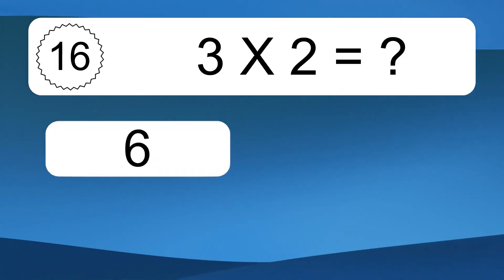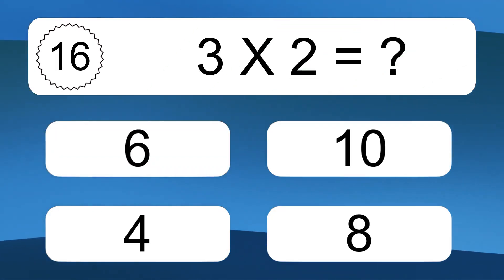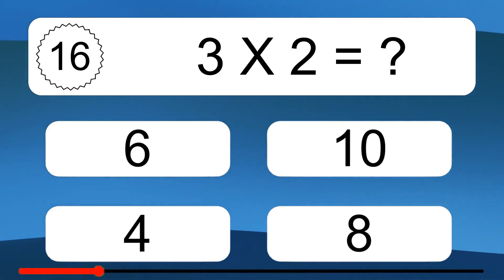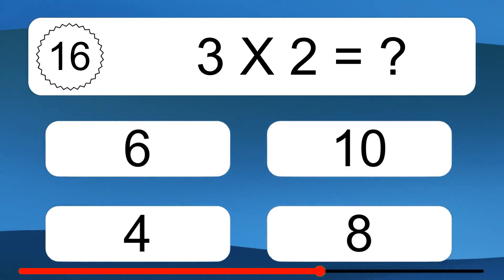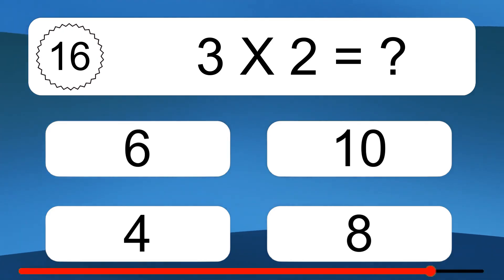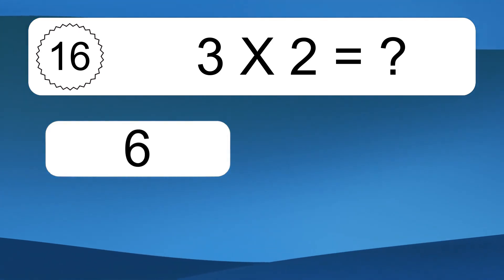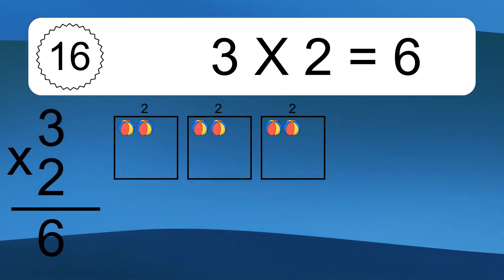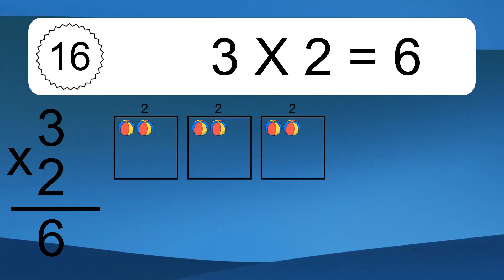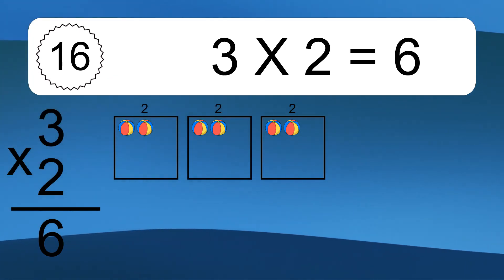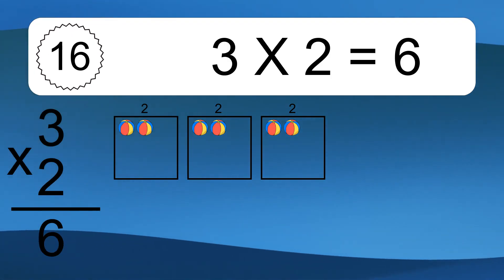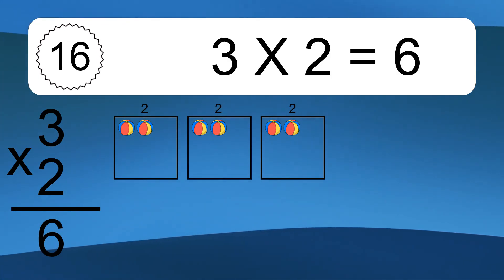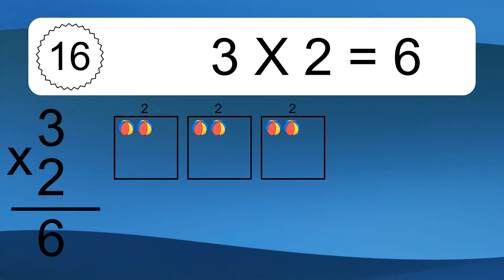3 times 2 equals 6. We have 3 boxes, and each box has 2 colorful balls inside. If you count all the balls in all the boxes together, you will have 3 times 2 balls. This equals 6 balls.